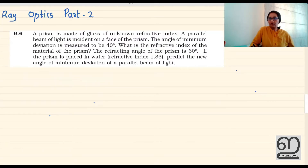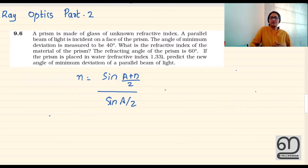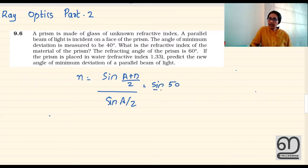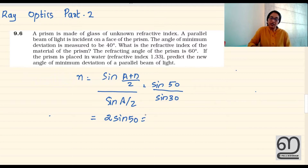The refractive index and the angle of minimum deviation — the prism angle is connected. Sin of (A plus D) by 2 equals the formula. Sin 13 is equal to 1 by 2, so it equals 2 times sin 15. Sin 15 is equal to 1 by 2, so if you multiply by 2, you get the answer 1.53.